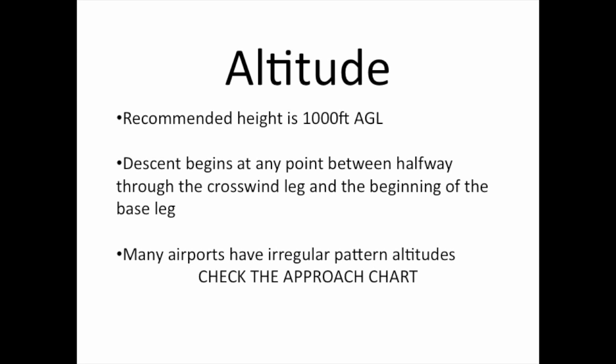Whenever possible, the traffic pattern takes place at about 1000 feet above ground level, or AGL. That means that if you were to set your altimeter to QFE, it would read 1000 feet. We will discuss altimeter pressure settings in another lesson, so don't worry if you don't know what QFE means. Depending on the size of the airfield and the airspeed of the aircraft being flown, the descent typically starts somewhere between halfway down the downwind leg and the beginning of the base leg. It's all about anticipation.